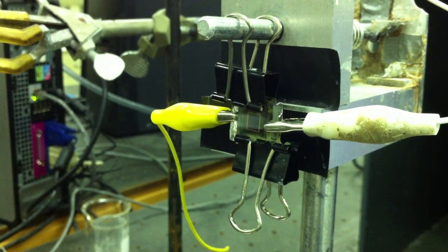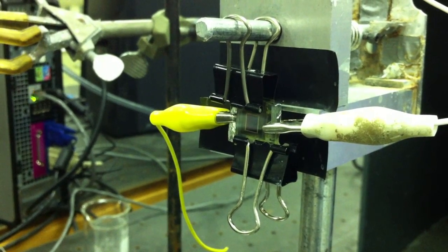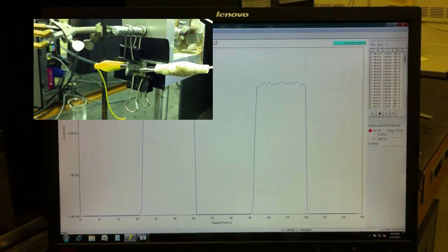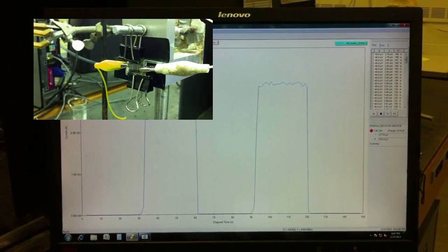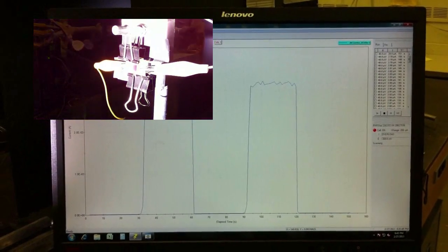After connecting the cell to the potentiostat, we're ready to test it using our solar simulator. Using software, we can monitor the photocurrent response of our solar cell.